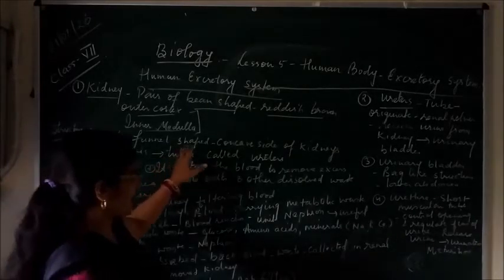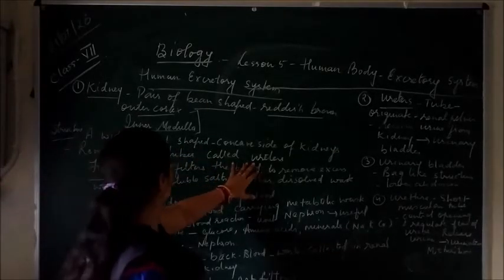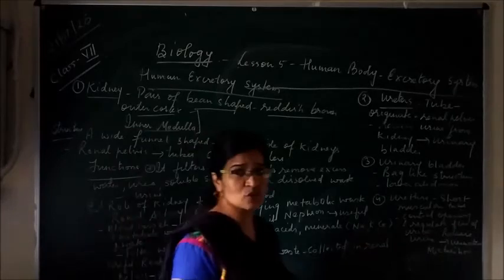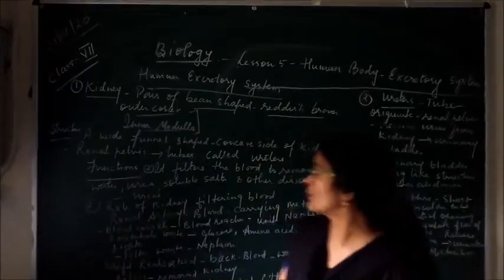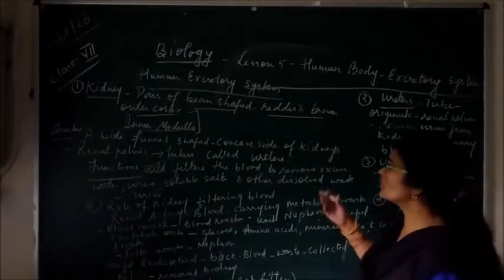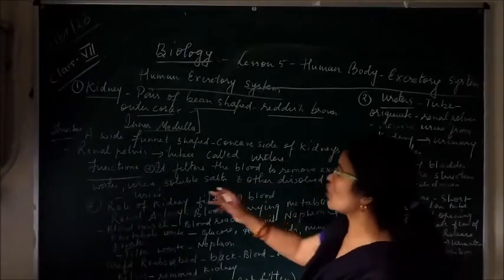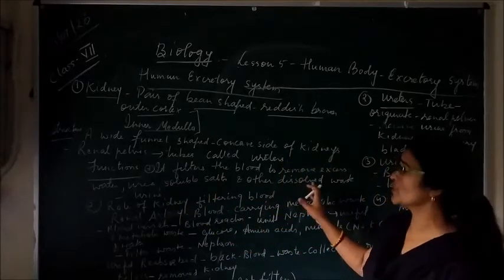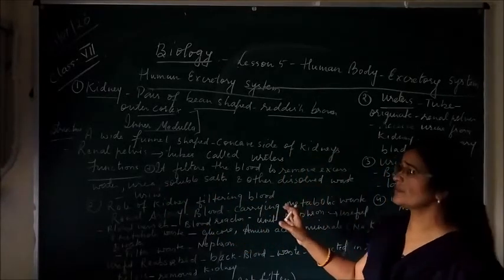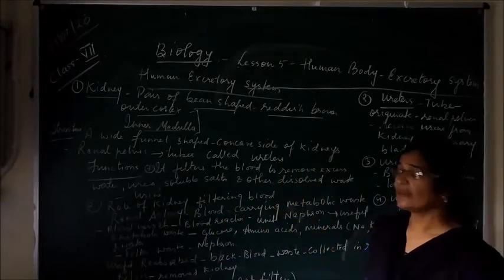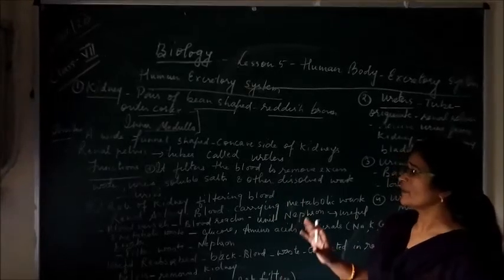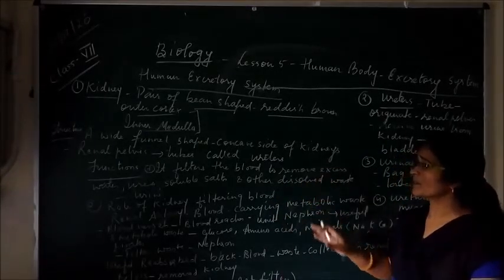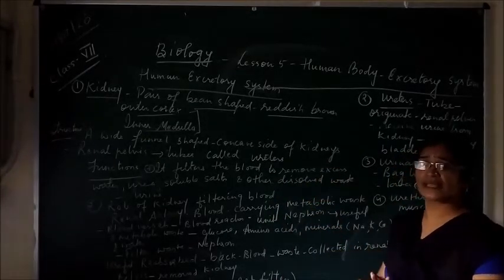The kidney is actually a wide funnel-shaped structure and it has some radial tubular structures which connect with the ureters. The function of the kidney is to filter the blood and to remove the excess water, urea, soluble salts, and other dissolved waste from the blood.